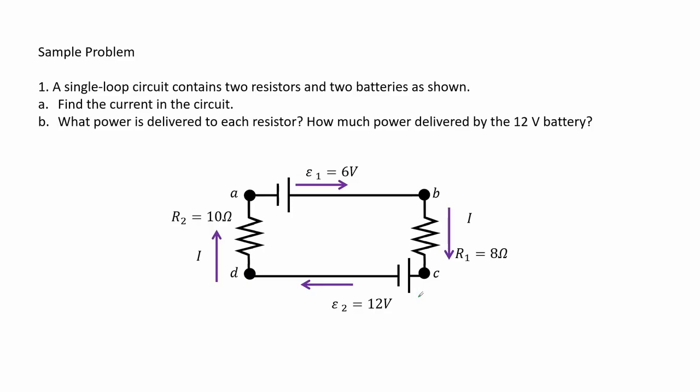Here we have a sample problem. A single loop circuit contains two resistors and two batteries as shown.